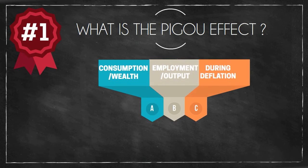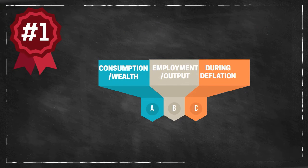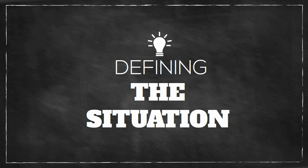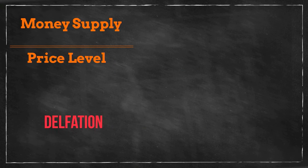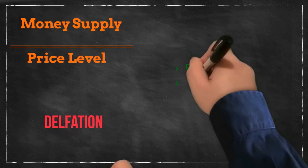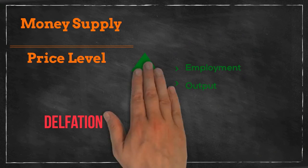What is the Pigou effect? The Pigou effect is an economic term which refers to the relationship between consumption and wealth, as well as employment and output during a period of deflation. In this situation, we would define wealth as the money supply divided by the current price level.